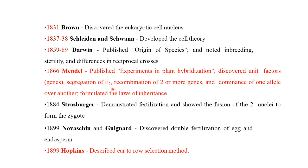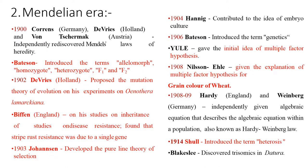Mendel discovered unit factors (genes), segregation in F2, recombination of two or more genes, and dominance of one allele over another, and formulated the laws of inheritance. Hopkins described the ear-to-row selection method in 1899.